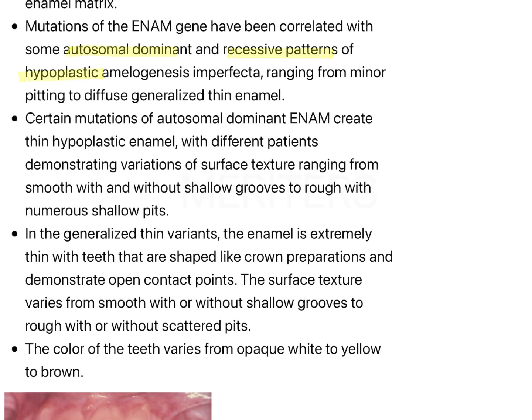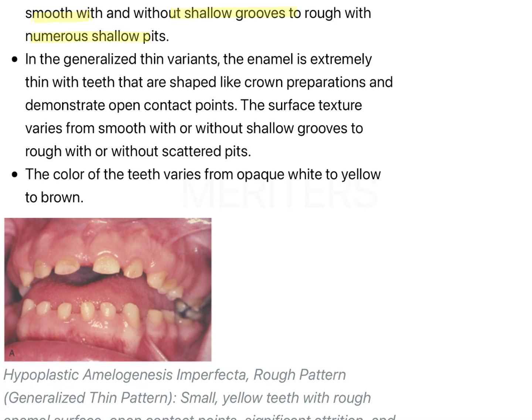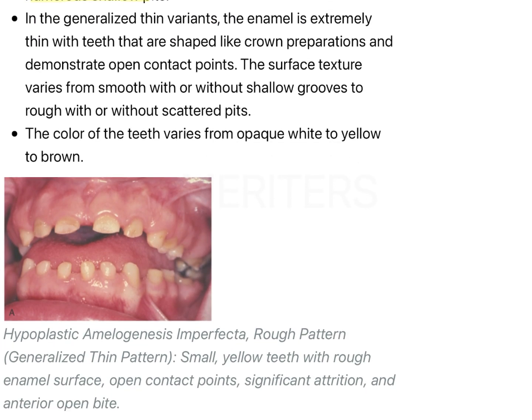This hypoplastic enamel will have surface texture ranging from smooth to shallow grooves to rough with numerous pits. This particular case shows a yellowish-whitish appearance of the teeth with smaller teeth, consistent with the hypoplastic type of amelogenesis imperfecta.